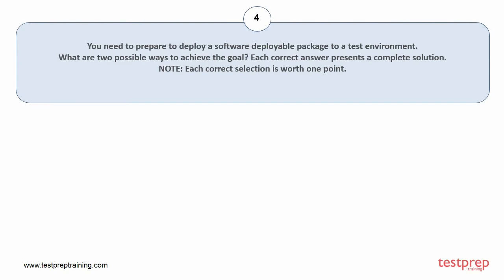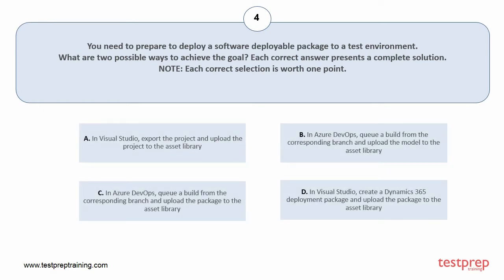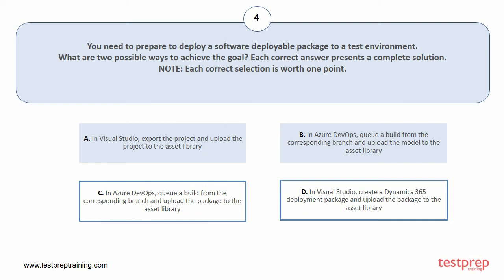Question number 4. You need to prepare to deploy a software deployable package to a test environment. What are two possible ways to achieve the goal? Each correct answer presents a complete solution. Note: each correct selection is worth one point. Your options are: A. In Visual Studio, export the project and upload the project to the asset library. B. In Azure DevOps, queue a build from the corresponding branch and upload the model to the asset library. C. In Azure DevOps, queue a build from the corresponding branch and upload the package to the asset library. D. In Visual Studio, create a Dynamics 365 deployment package and upload the package to the asset library. The correct answers are option C and D.